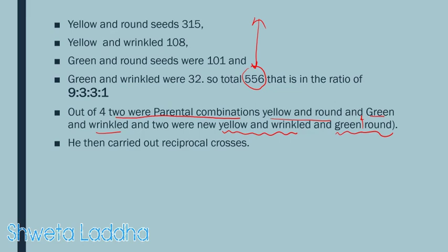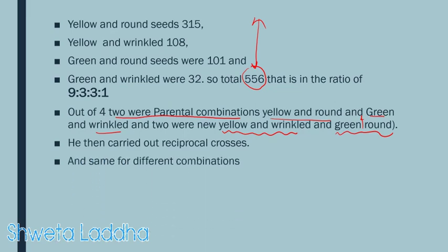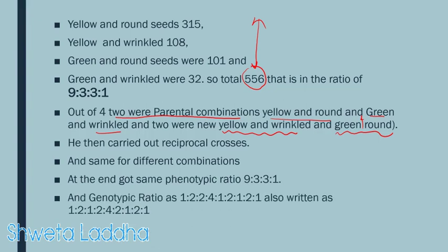First time he treated one as a male, second time he treated the same as a female, and he carried out the same type of dihybrid crosses for all his seven different varieties in different combinations. Every time he got the same phenotypic ratio 9:3:3:1, and the genotypic ratio obtained was 1:2:2:4:1:2:1:2:1.